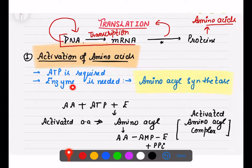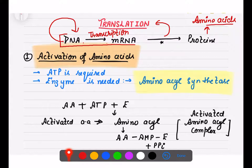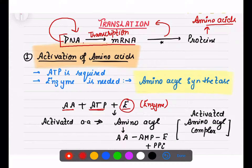For activation, we need ATP as well as a particular enzyme called aminoacyl synthetase. The reaction involves amino acid combined with ATP in the presence of the enzyme, producing an activated amino acid known as aminoacyl.